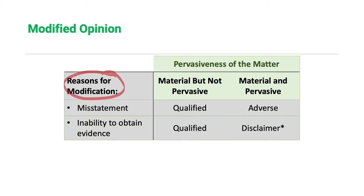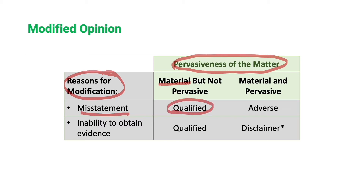If the auditor, having obtained sufficient and appropriate evidence, concludes that the reason for modification is a misstatement, and that misstatement individually or in aggregate is material but not pervasive, the auditor issues a qualified opinion. Similarly, if the reason is an inability to obtain sufficient and appropriate evidence but the effect of the matter is only material but not pervasive, the auditor will also issue a qualified opinion.